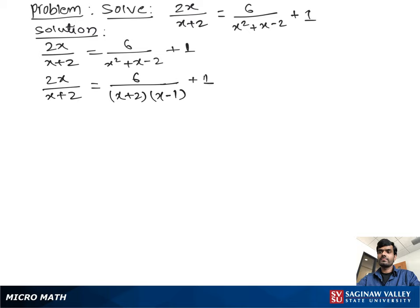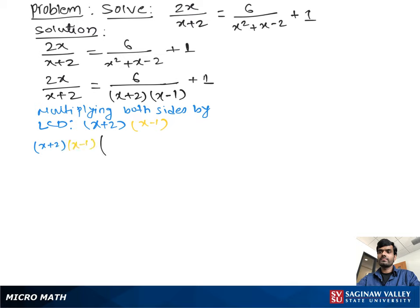We multiply both sides by the lowest common denominator, LCD, which is x plus 2 times x minus 1. So we can write: x plus 2 times x minus 1 times 2x over x plus 2 is equal to x plus 2 times x minus 1 times 6 over x plus 2 times x minus 1, plus 1.